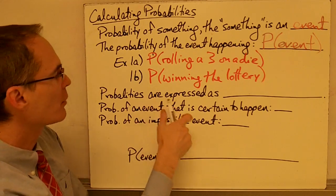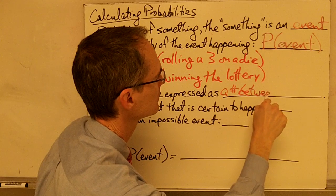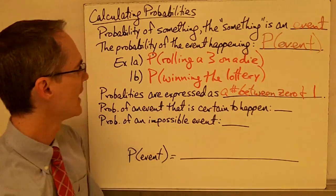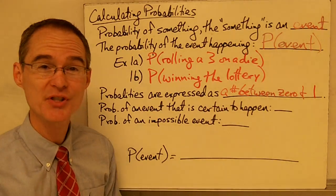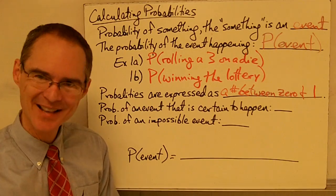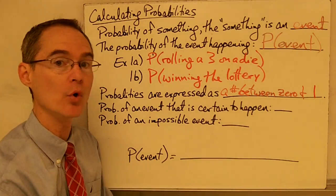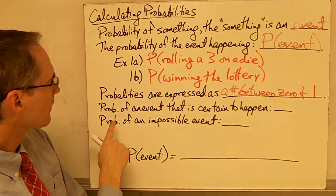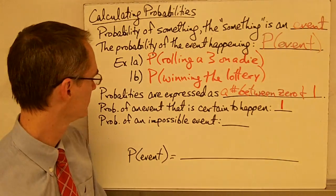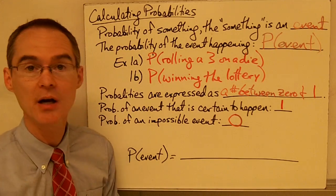Probabilities are always expressed as a number between 0 and 1. Notice that a probability is not expressed as a percentage — technically speaking, a probability is always a number between 0 and 1, not a percentage. The probability of an event that is certain to happen is 1. The probability of an impossible event is 0.